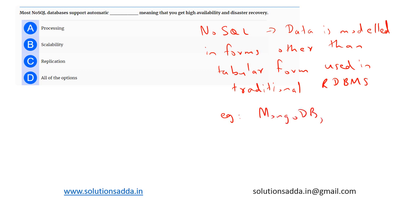These are some famous examples of NoSQL databases. The storage environment is essentially virtualized from the developer's perspective. NoSQL databases support automatic replication, which means we can have high availability as well as disaster recovery. So based on the options, option C — replication — is the correct answer.